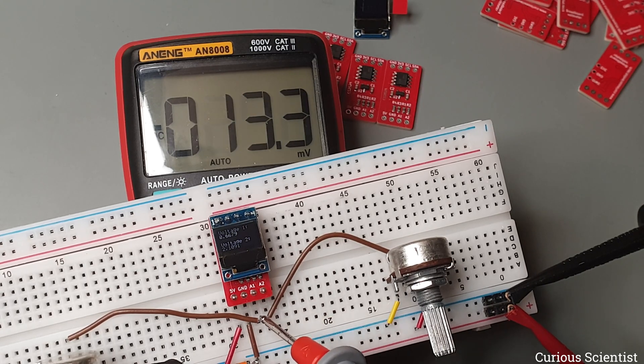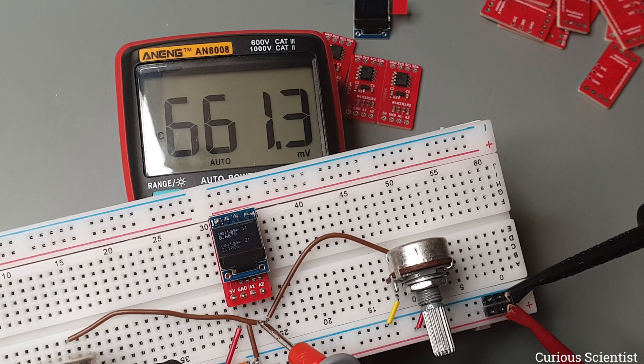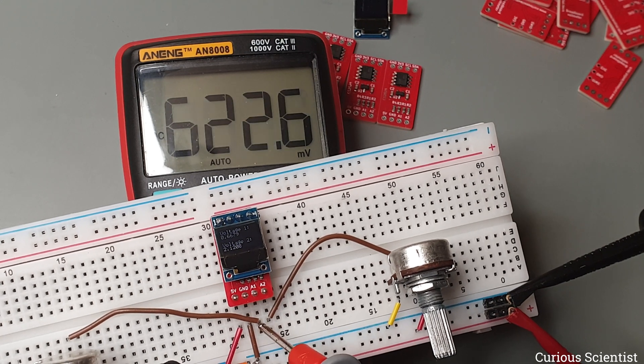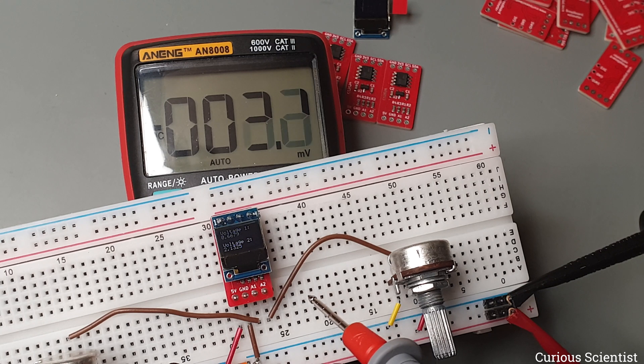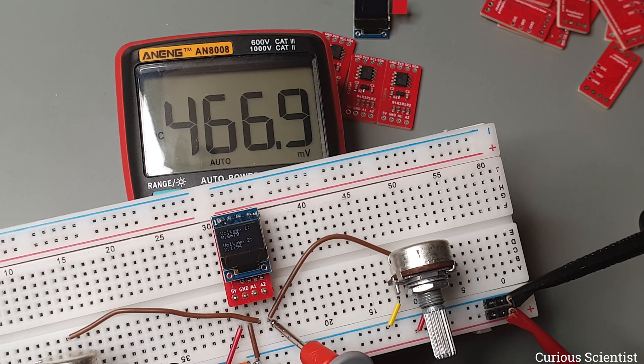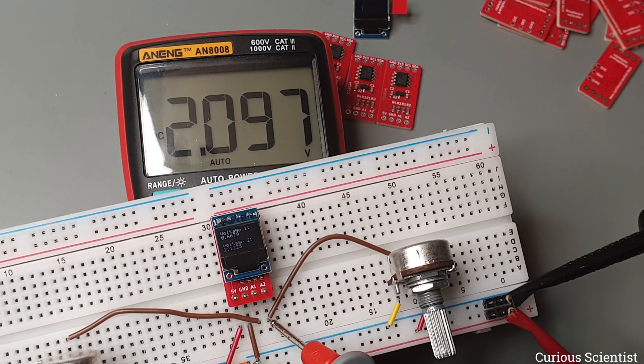As you can see, the first channel is spot on, it gives almost the same readings as the multimeter, and the second channel is a bit off, but only by about 30 millivolts. For me this is acceptable, because I'm not looking for a 6.5 digits performance, I just want to get reasonable readings, and as you can see, the circuit does it well.